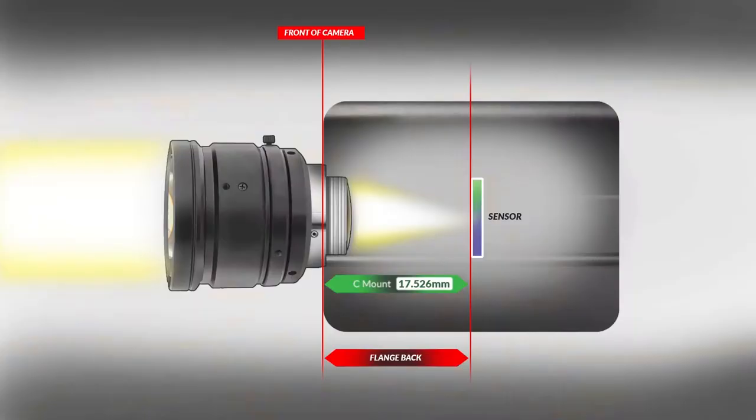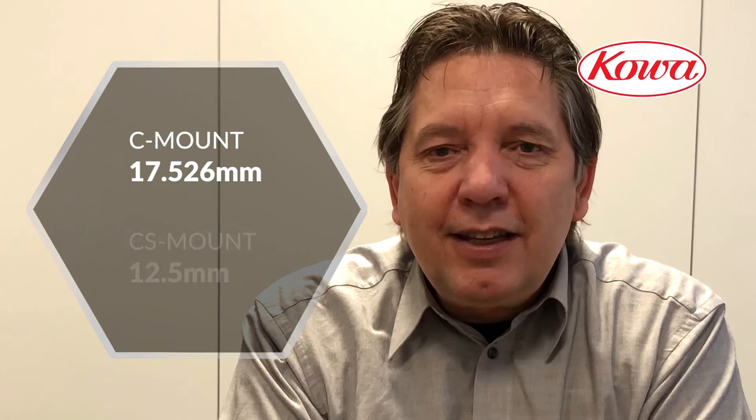There's also a CS-mount available. CS-mount lenses are sometimes used for low-cost machine vision applications but are more common for standard cameras. CS-mount lenses have the same thread pitch as C-mount, but the back focal length is 12.5 millimeters. So remember: C-mount back focal length is 17.526 millimeters, CS-mount is 12.5 millimeters.